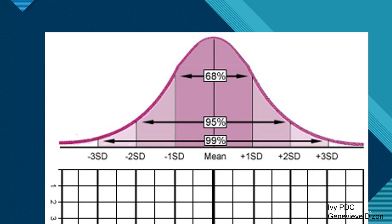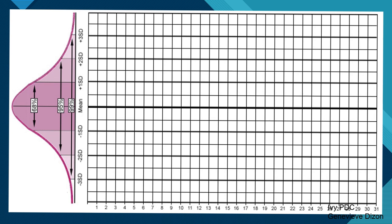Let's go back to the Gaussian curve, which has the mean in the middle, positive 1SD, 2SD, and 3SD on the right, and negative 1SD, 2SD, and 3SD on the left — showing 68% within 1SD, 95% within 2SD, and 99% within 3SD. However, using this chart as-is makes it very difficult to plot values, since in laboratory quality control we have many values to input.